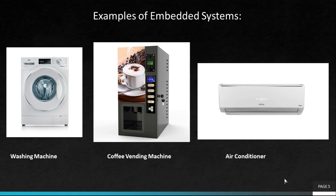These are some examples of embedded systems: the washing machine, coffee vending machine, and the air conditioner. All three have their own functionalities — the washing machine is used only for washing clothes, the coffee vending machine for producing coffee, and the air conditioner for cooling. They are designed to perform only those specific functions. This forms the concept of embedded systems, and I hope you now have a clear idea of what an embedded system and embedded firmware are. In the next video, I shall explain the two different techniques for designing firmware. Thank you.